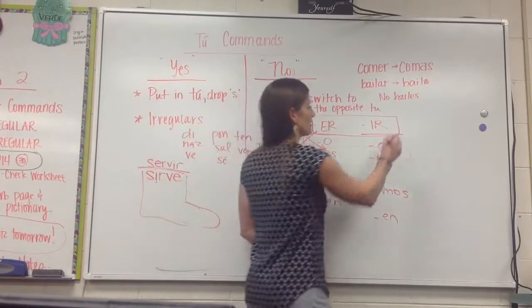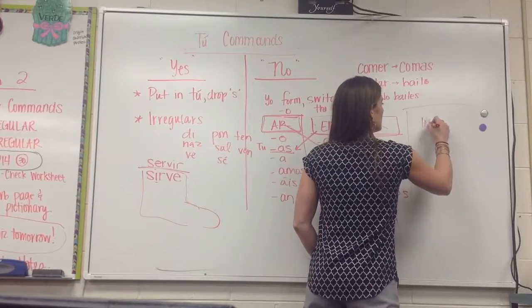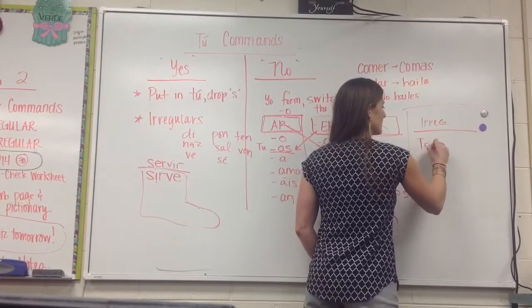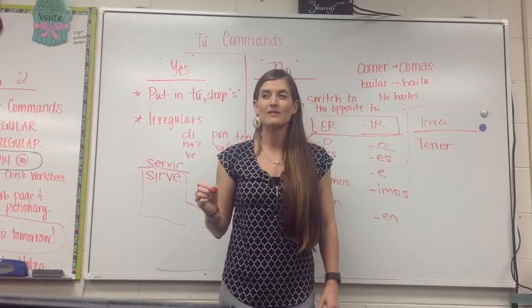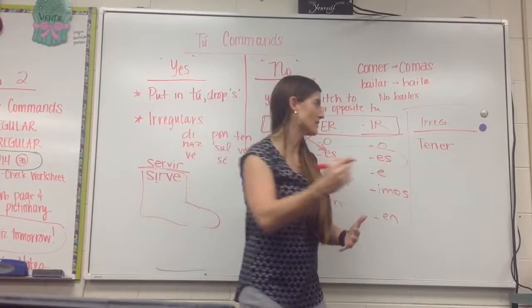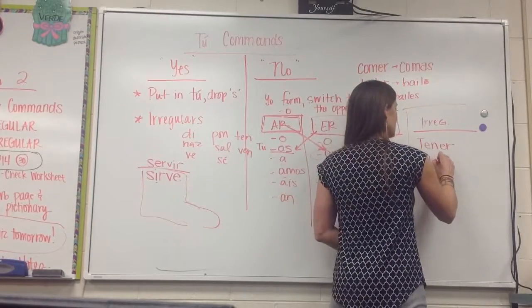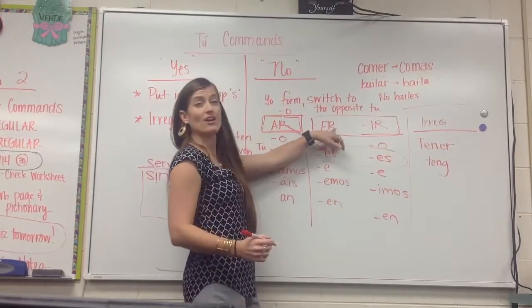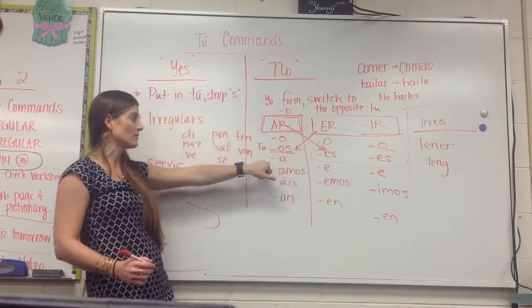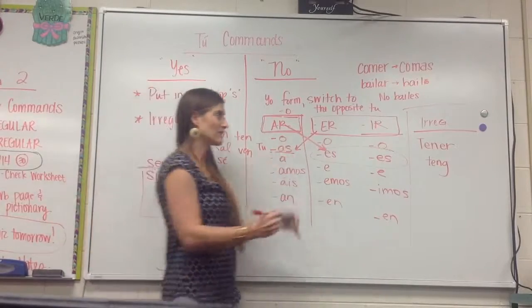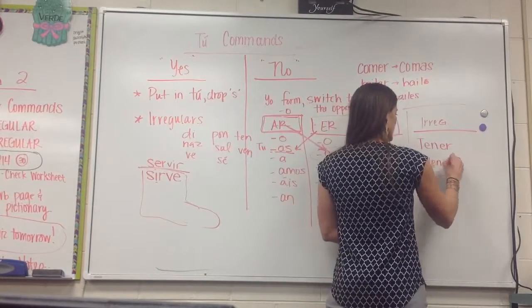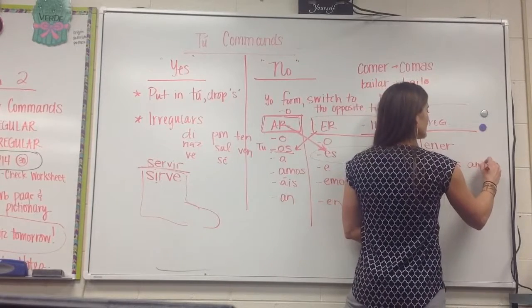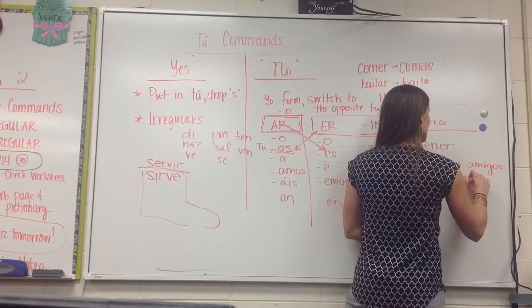So let's try one of your irregulars. Like if I say tener. What is the irregular yo form of tener? Vengo. Tengo. Tengo. So I'll go, pongo, ve, ya, se. So I start with teng, drop off my o. Tener is an ER verb, so what ending do I go to? Tengas. Tengas. No tengas. I'm going to say, don't have mean friends. No tengas amigos antipáticos.